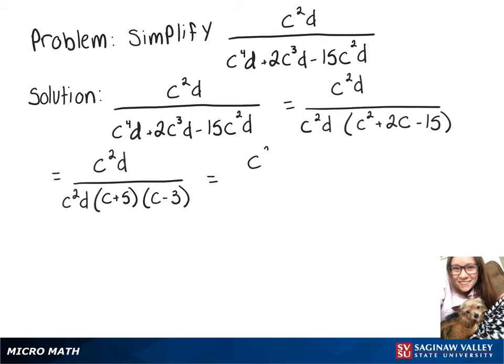We can rewrite that as c squared d over c squared d times 1 over c plus 5 times c minus 3.